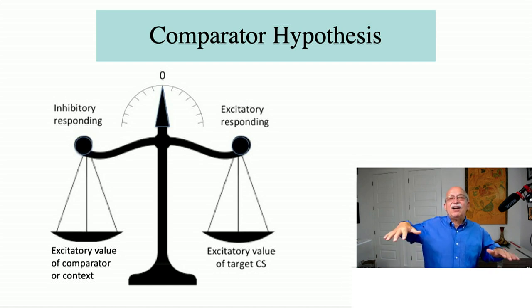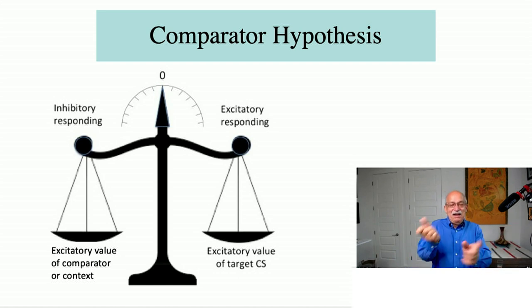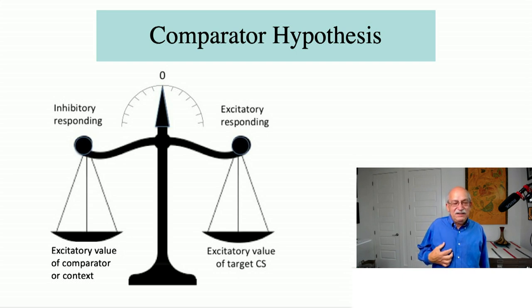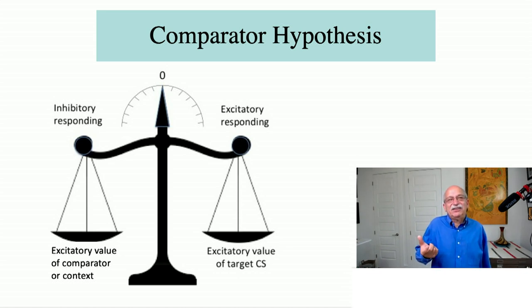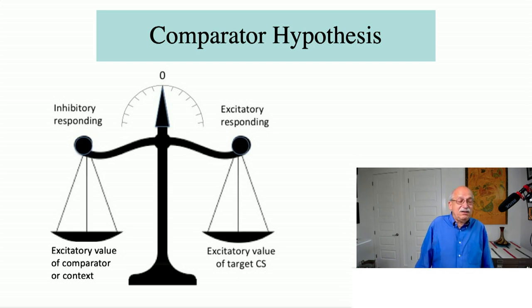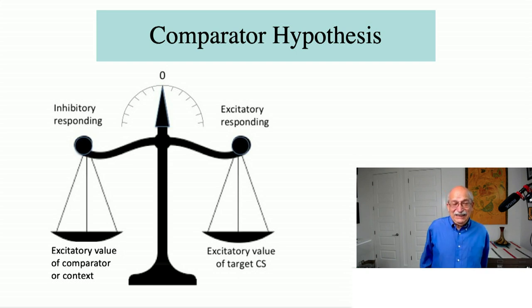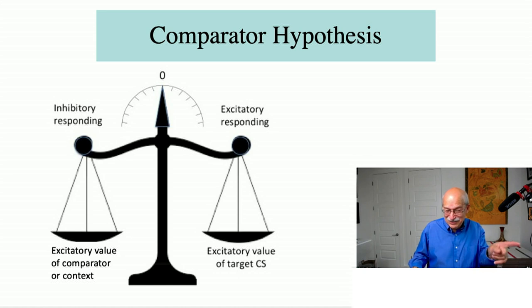If excitation to the target is stronger, the right side of the balance gets pushed down. If the context or comparator stimulus has a lot of excitatory value, then the left side of the balance gets pushed down. If the right side of the balance is heavier, you get excitatory responding; if the left side is heavier, you get inhibitory responding. That in a nutshell is what the Comparator Hypothesis is all about, though this doesn't yet tell you why it's so powerful and interesting.